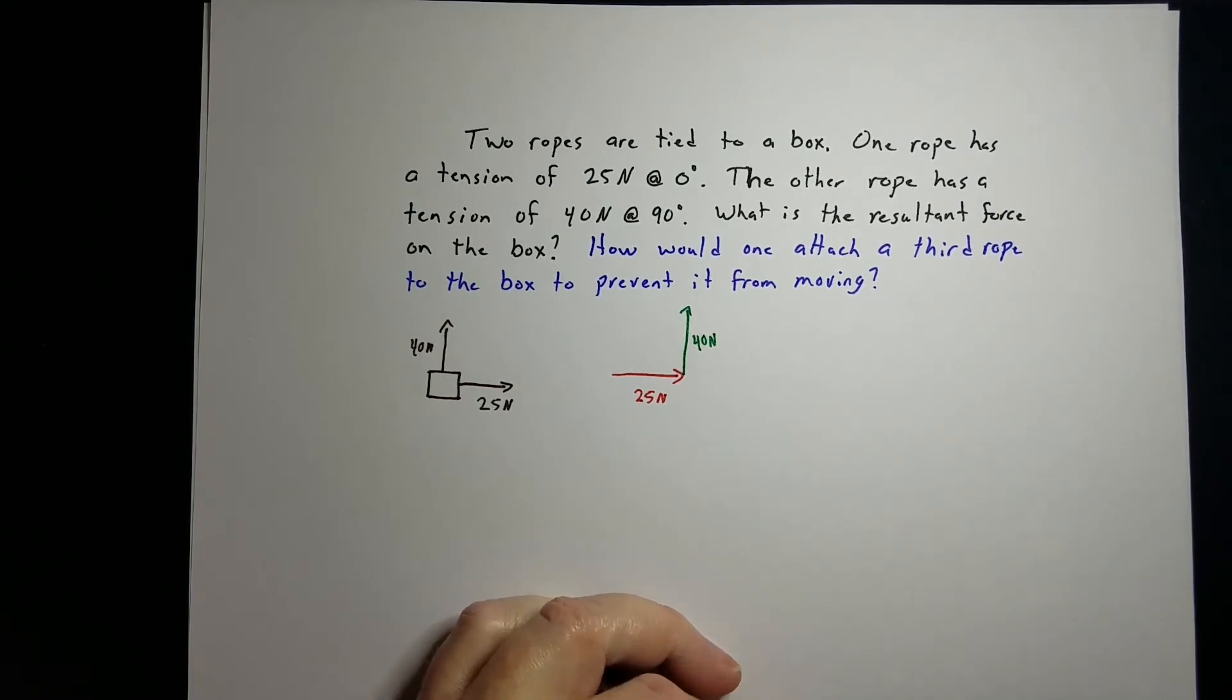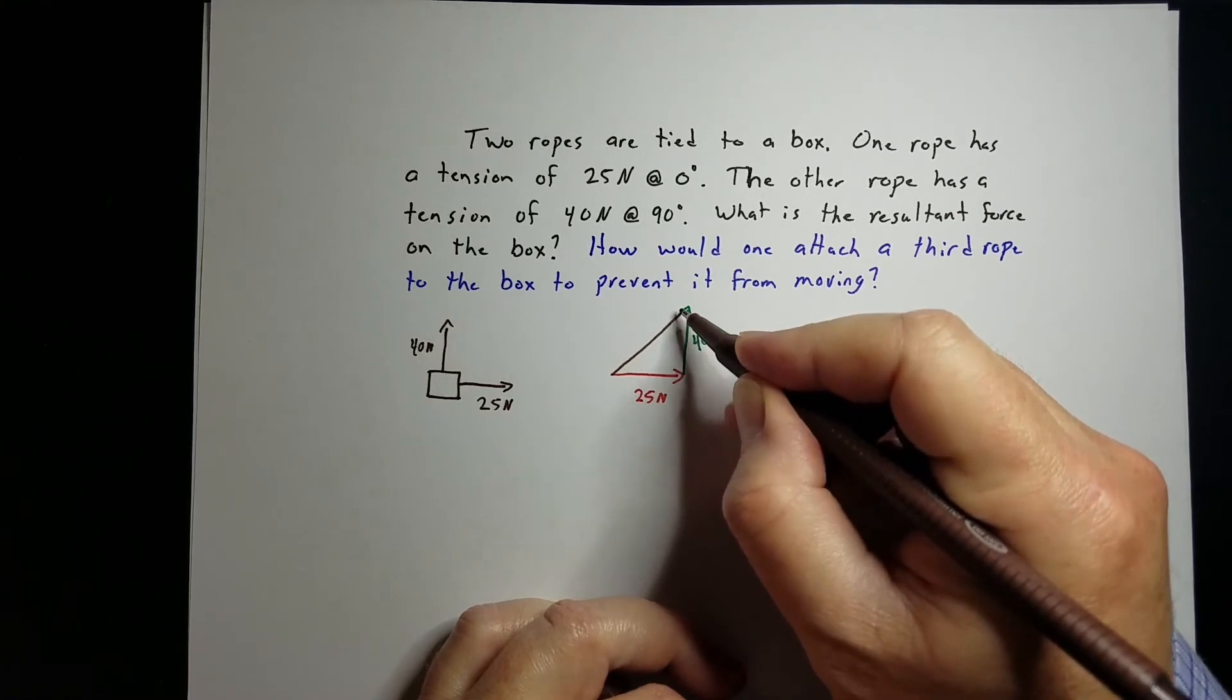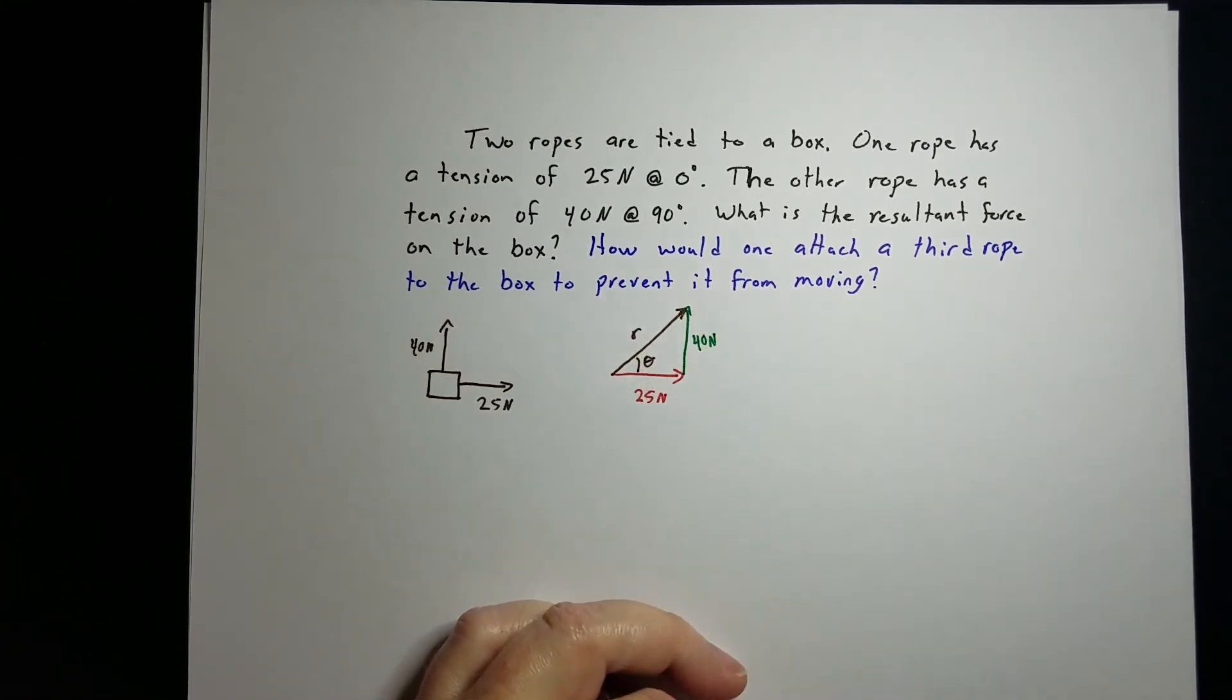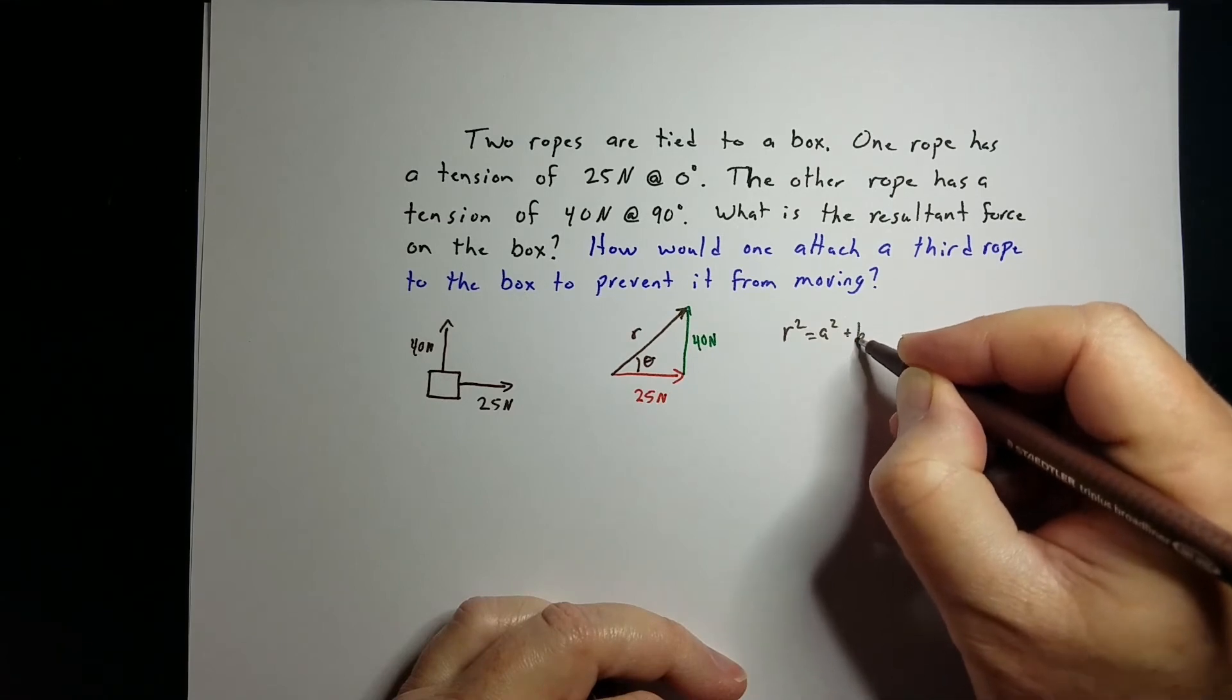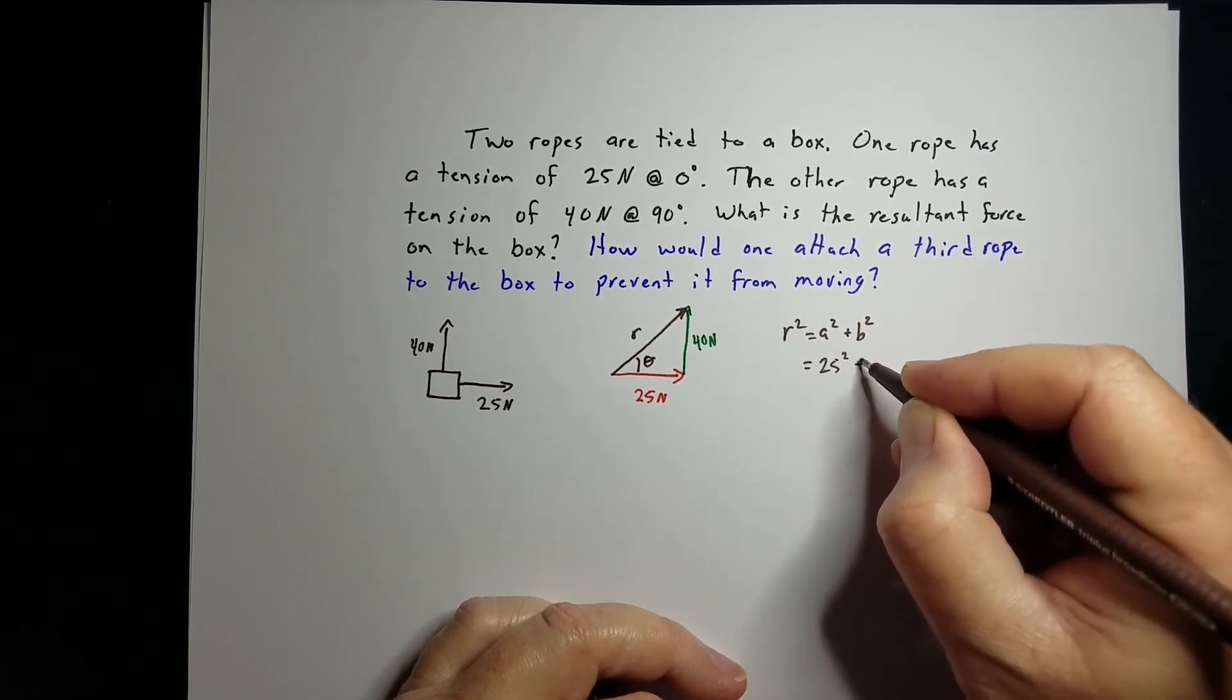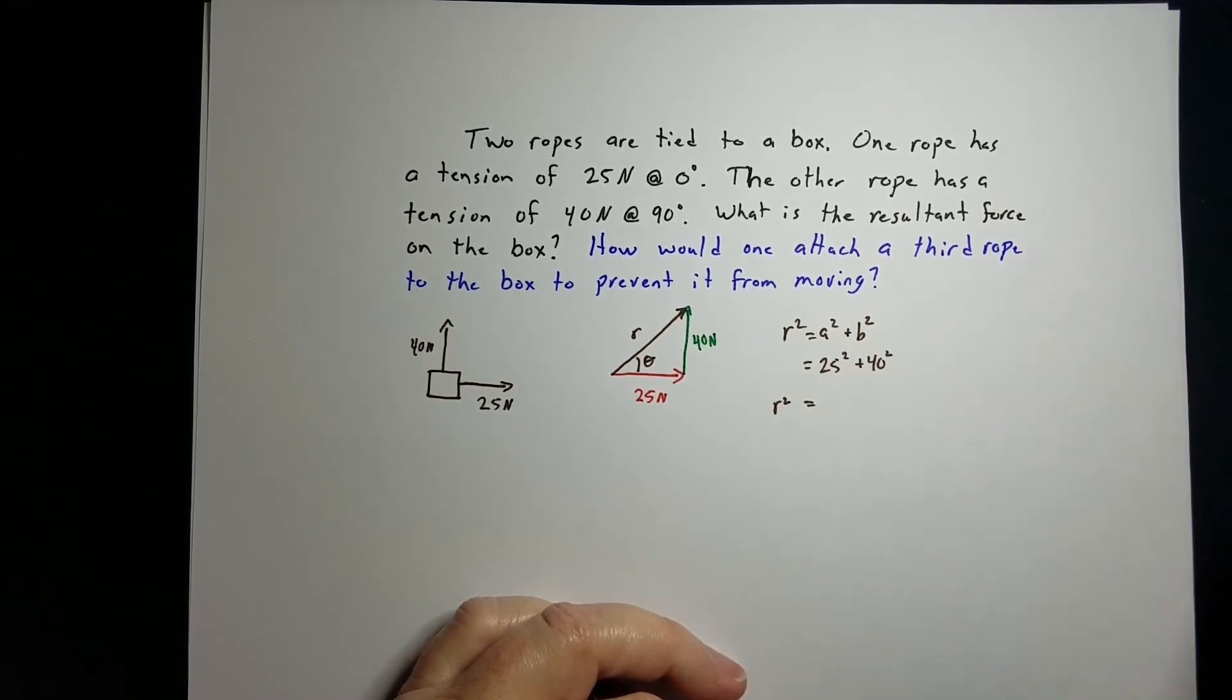We've got a good right triangle there. I want to find the resultant. The resultant always goes from where you start to where you end. We've got to figure out the angle. Just like in a previous video, r squared equals a squared plus b squared. That's 25 squared plus 40 squared.